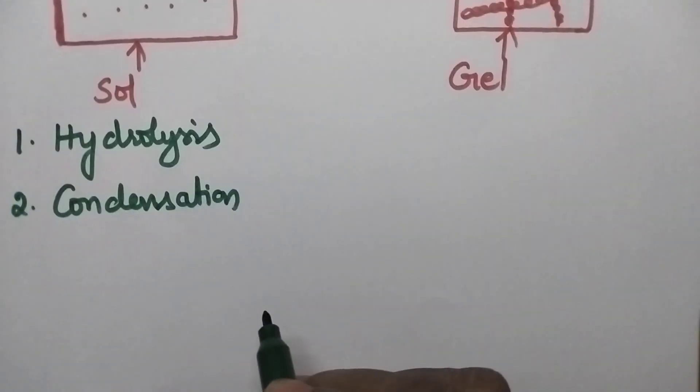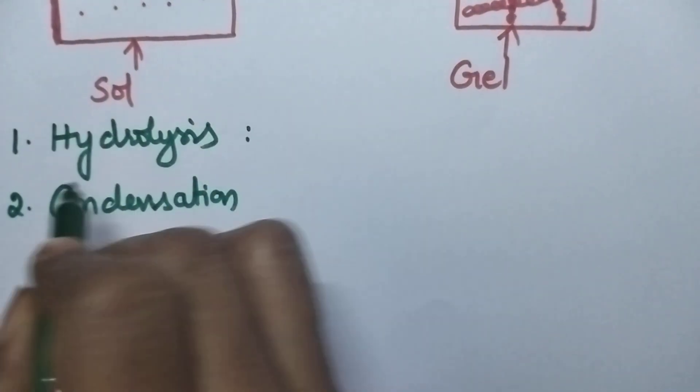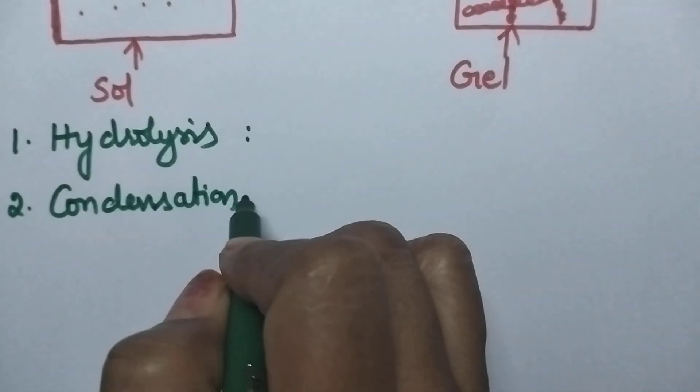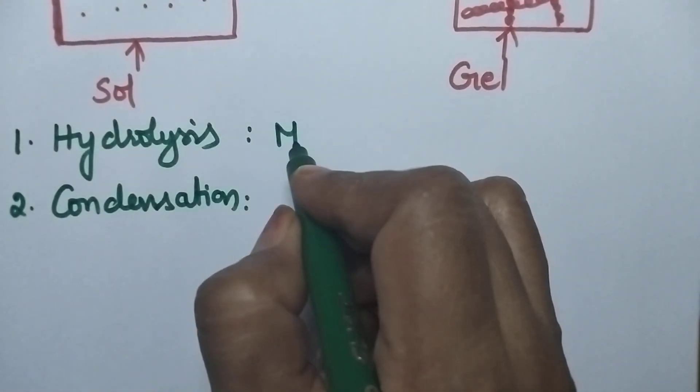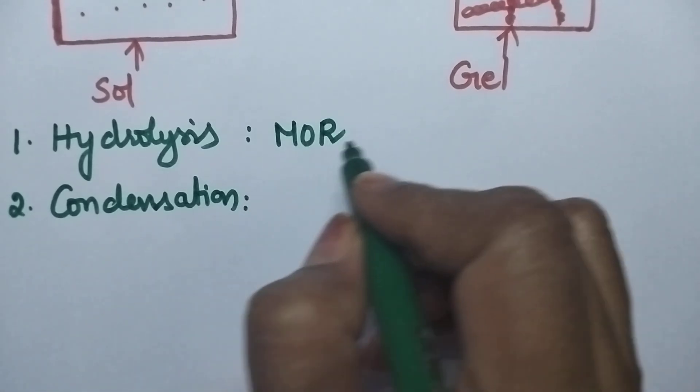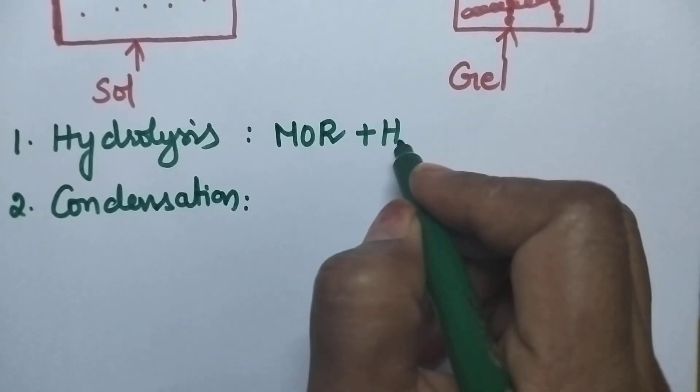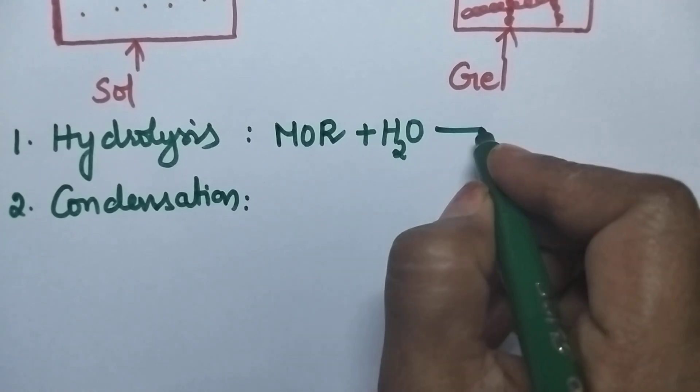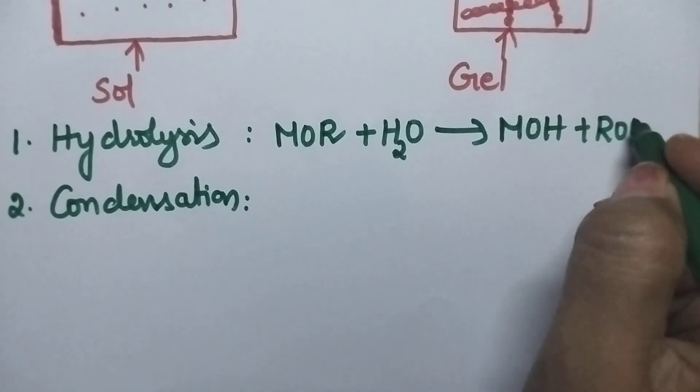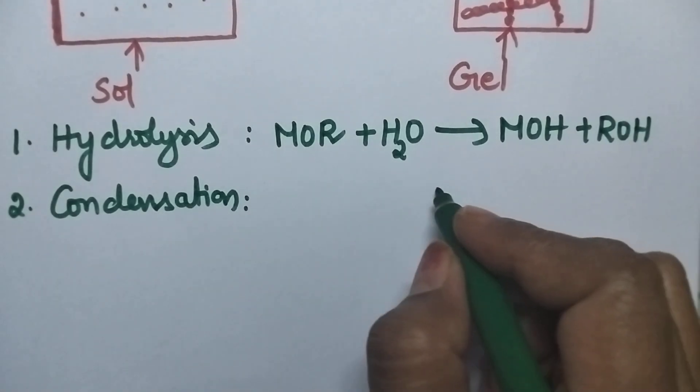So Sol Gel method involves two steps. In the first step it undergoes hydrolysis and in the second step it undergoes condensation. So let us consider the colloidal solution MOR. So when it undergoes hydrolysis it results in the formation of MOH plus ROH type solutions.